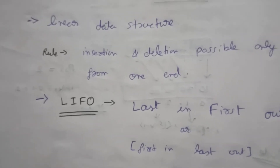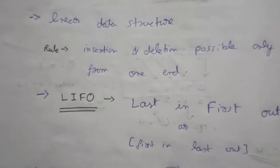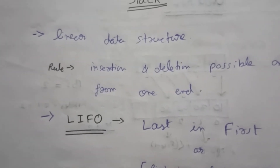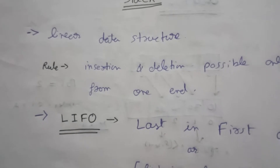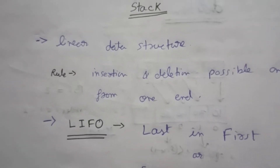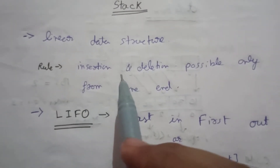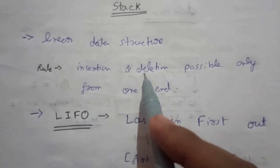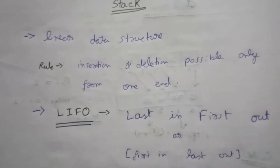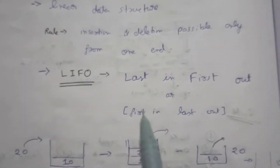Welcome to another lecture of our data structure playlist. Today we are going to learn about a new data structure: the stack. Stack is a linear data structure. The rule of stack is that insertion and deletion — these two operations — are possible only from one end, that is from the top.